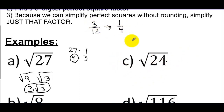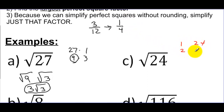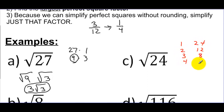So here's another example: the square root of 24. If I were to think of factors of 24 and went down the list, I'd say 1 and 24, 2 times 12, 3 times 8, 4 times 6 — and that's it. Those are all the factors of 24.